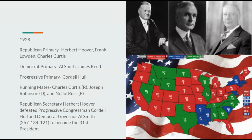Going on to the 1928 election, Republicans would nominate Herbert Hoover with Charles Curtis, Democrats Al Smith with Joseph Robinson, and Progressives Cordell Hull with Nellie Ross — the former governor of Wyoming, the first female governor, now the first female running mate. That wouldn't be enough, as Herbert Hoover, the Secretary of Commerce under Leonard Wood, would defeat Congressman Cordell Hull and Governor Al Smith, 267 to 134 to 121, to become the 31st President.